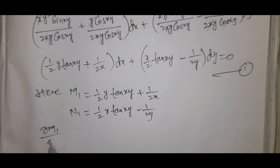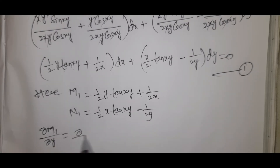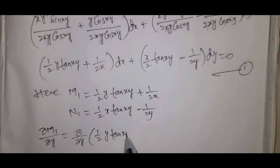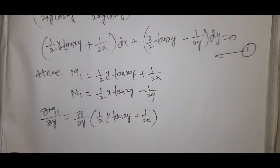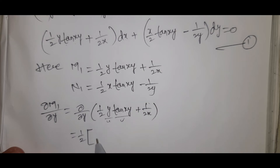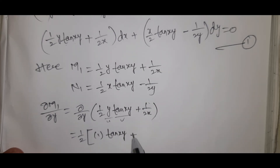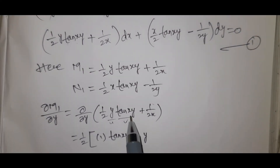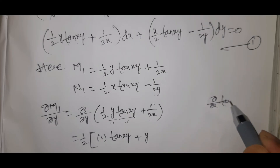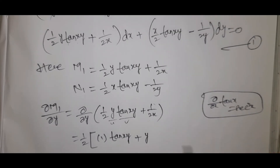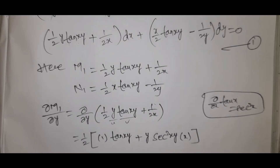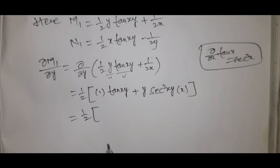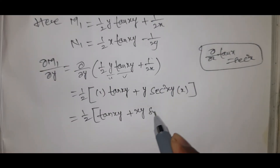Now computing ∂M1/∂y: differentiating (1/2y)·tan(xy) + 1/(2x) with respect to y. The term 1/(2x) has no y, so it contributes 0. Using the product rule on (1/2y)·tan(xy): we get (1/2)·[1·tan(xy) + y·sec²(xy)·x], which equals (1/2)·tan(xy) plus (xy/2)·sec²(xy).